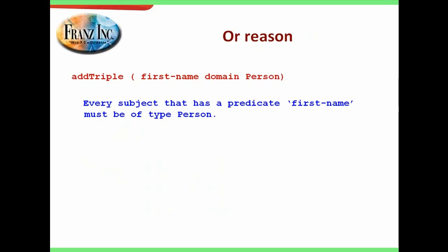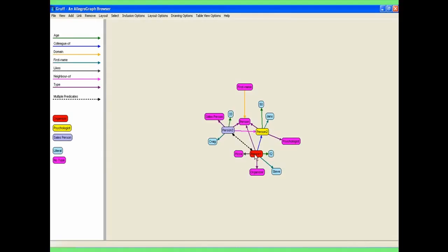And then with a triple store you can do reasoning too. So I could add a triple that says 'first-name domain Person'. In English that means every subject that has a predicate first-name must be of type Person. If I add that triple, then suddenly we see that person one, person two, and person three all have first-name, so they're now suddenly a Person. This is probably the shortest way ever to explain what reasoning is in a triple store.